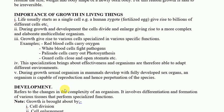Different organisms can live in different environments. For example, humans can move from a hot environment to a cold environment and survive, because of growth. New cells which are formed tend to differentiate into certain kinds of adaptations which allow organisms to live in certain kinds of environments. Additionally, through growth, sexual organisms in mammals develop fully developed sex organs. An organism then becomes capable of reproduction and hence the perpetuation of the species. That is also an important benefit of growth and development.